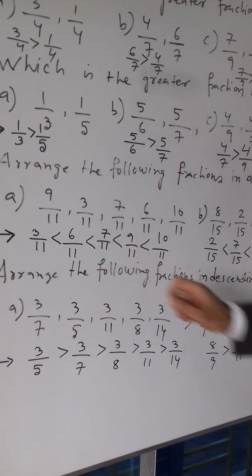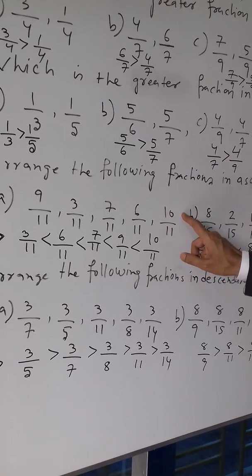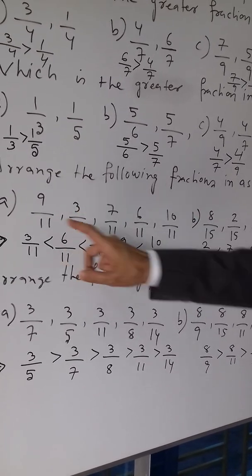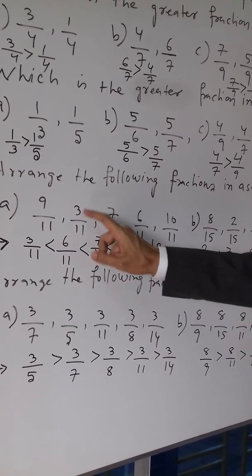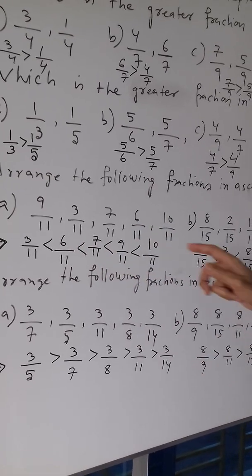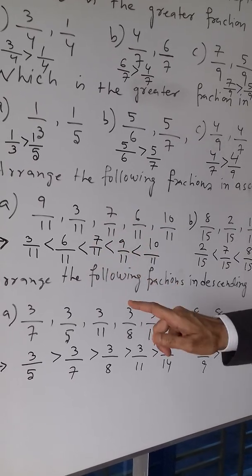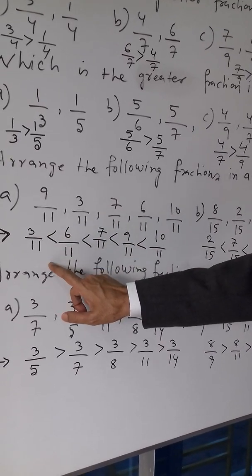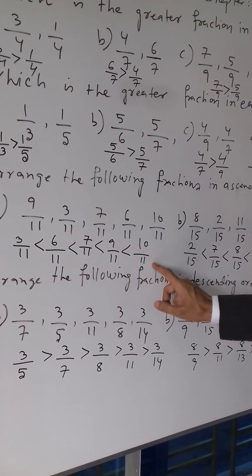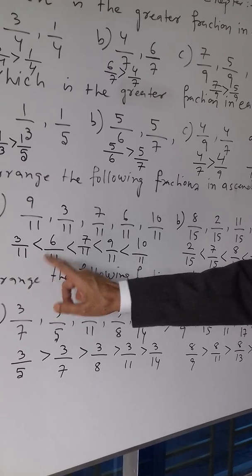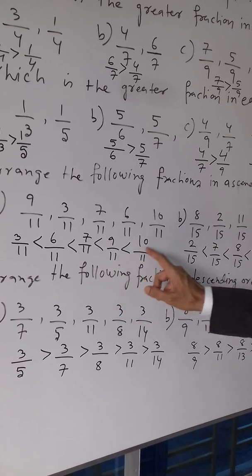Which one is the greatest? 10, so 10 by 11 is the greatest, then 9 by 11, then 7 by 11, then 6 by 11, then 3 by 11. So the lowest is 3 by 11. Therefore in ascending order: 3 by 11 is less than 6 by 11, less than 7 by 11, less than 9 by 11, less than 10 by 11.